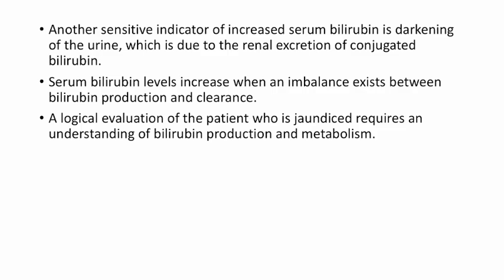Another sensitive indicator of increased serum bilirubin is darkening of the urine, which is due to the renal excretion of conjugated bilirubin. Bilirubin is normally excreted into the bile, so how it reaches the kidney will be explained in upcoming slides. Serum bilirubin levels increase when an imbalance exists between production and clearance.